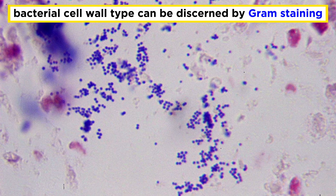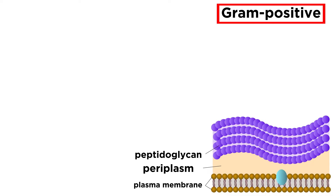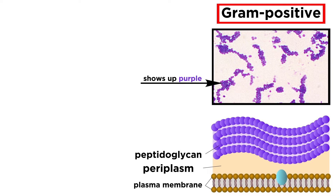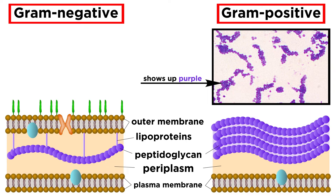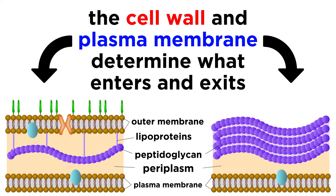Bacterial cell walls have some differences that can be differentiated with a technique called gram staining. A bacterial sample is stained with various dyes and then rinsed with alcohol, and the color that remains tells us about the structure of the cell wall. Gram positive bacteria have cell walls with lots of peptidoglycan, while gram negative bacteria have another outer membrane full of lipopolysaccharides.